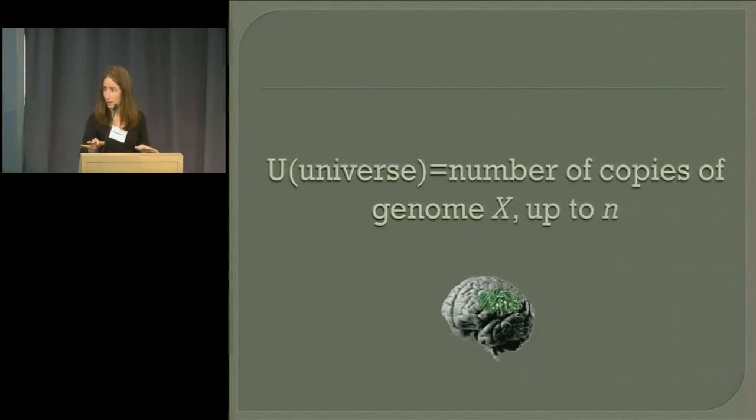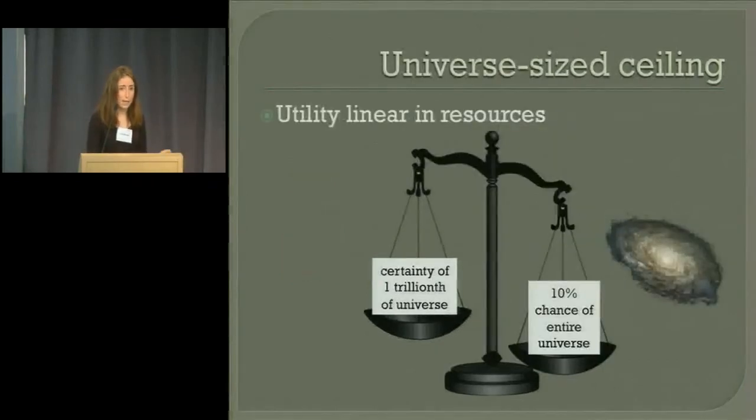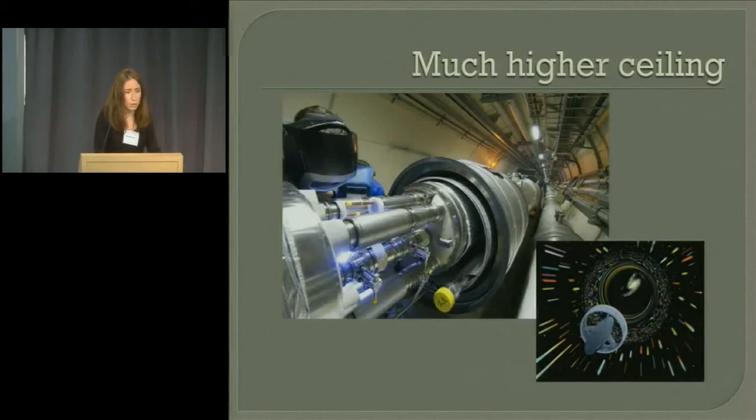Let's consider a different set of AIs. For simplicity, we'll consider a bunch of different goal systems of the form utility of the universe is equal to the number of copies of some particular genome X, up to N copies. If N is small, it will prefer a certainty of a trillionth of the universe to 10% shot at the whole thing, because the trillionth is enough already to get it to N. If N is universe size, it will prefer the 10% shot at the universe, which has a trillion times the value. If N is much higher than the universe, though, interesting things happen.